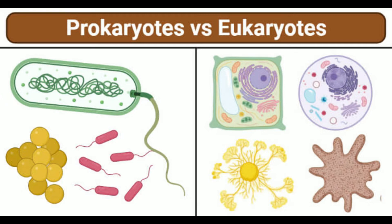Prokaryote Structure: The structure of a prokaryote is not as complex as eukaryotic cells, as they have primitive cell organelles. Most prokaryotic cells have the following components. Capsule: This is an additional outer covering in some prokaryotic cells that serves to protect the cell against foreign invaders. The capsule is made up of polysaccharides that allow the cells to cling to various surfaces and preserve moisture in the cell.